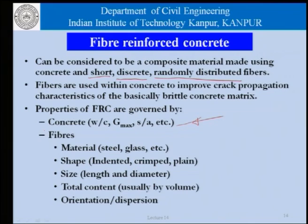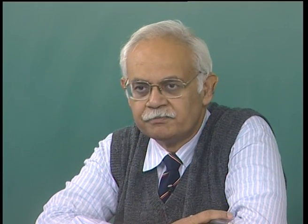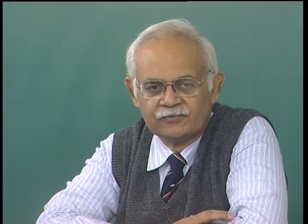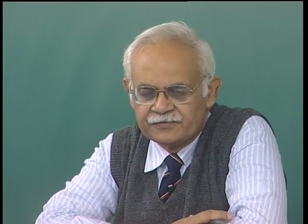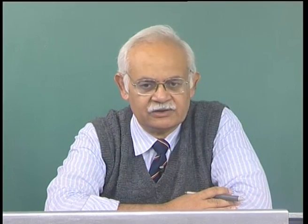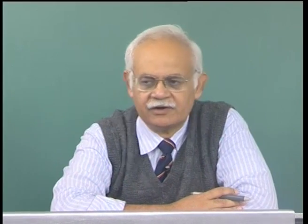The properties of the fibers are related to: the material used — steel, glass, carbon, polyethylene; the shape — indented, crimped, or plain; the size — length and diameter; the total fiber content, usually expressed by volume; and orientation and dispersion. These are the parameters based on which we can estimate the properties of a fiber reinforced concrete.